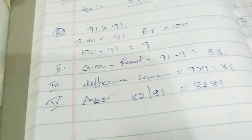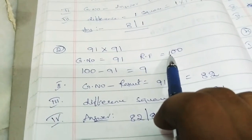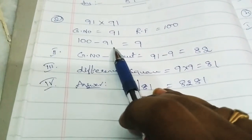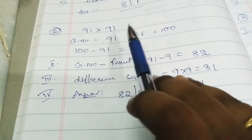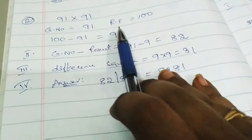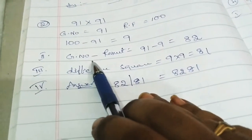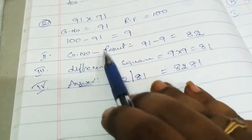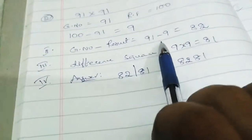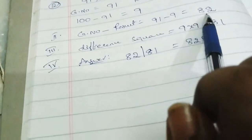For 91 into 91, the given number is 91, a double-digit number, so we take round figure as 100. First step: 100 minus 91 is 9. Second step: given number minus the result of the first step — 91 minus 9 is 82.